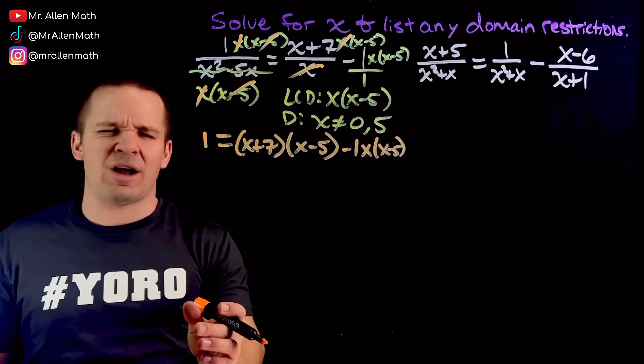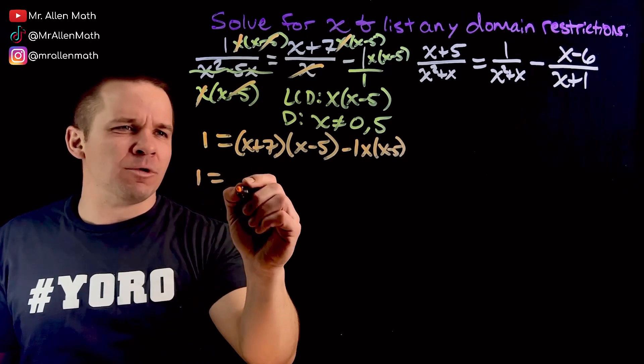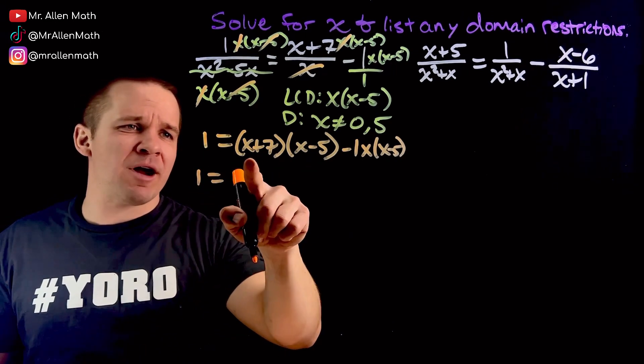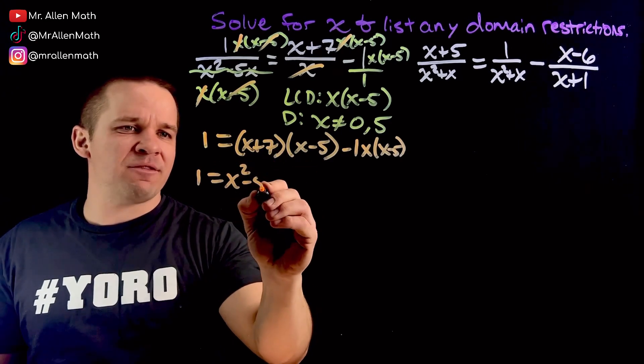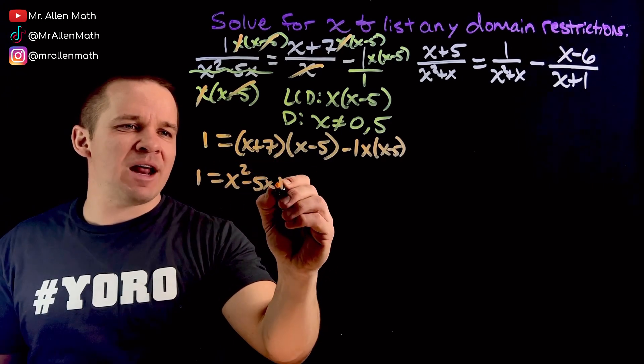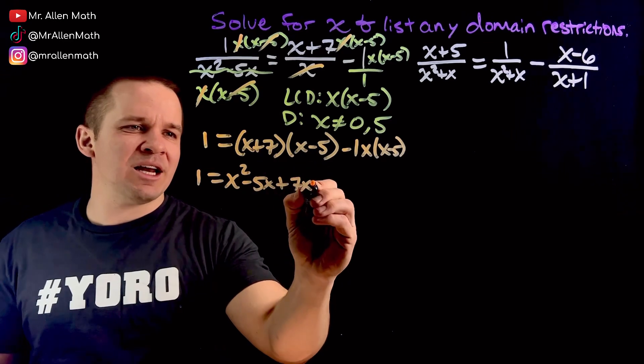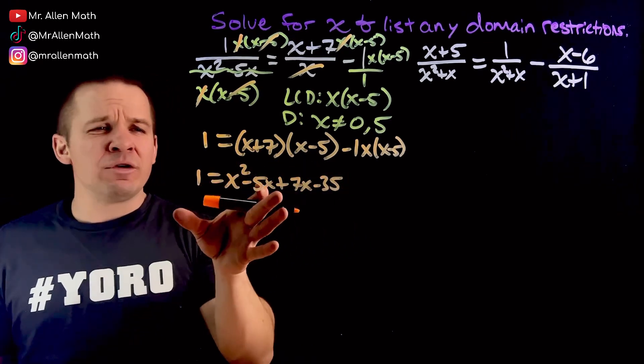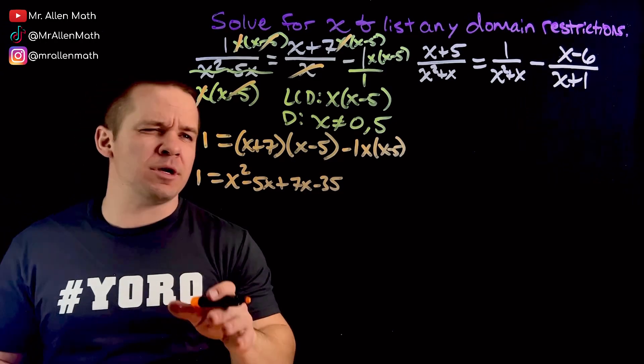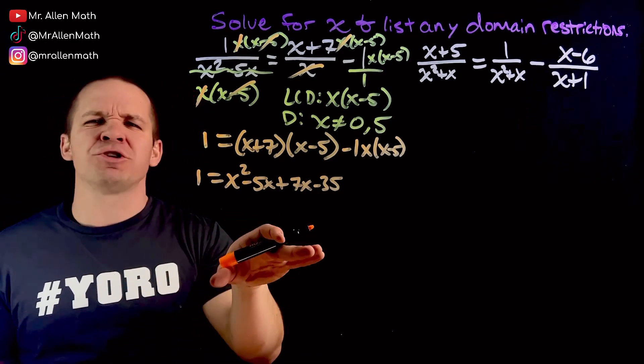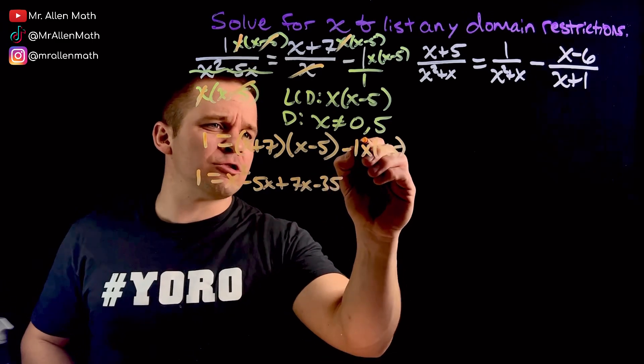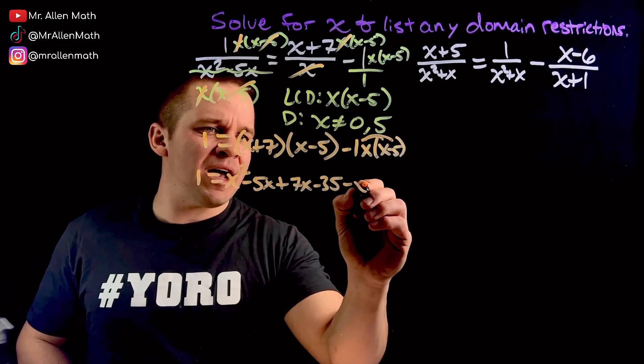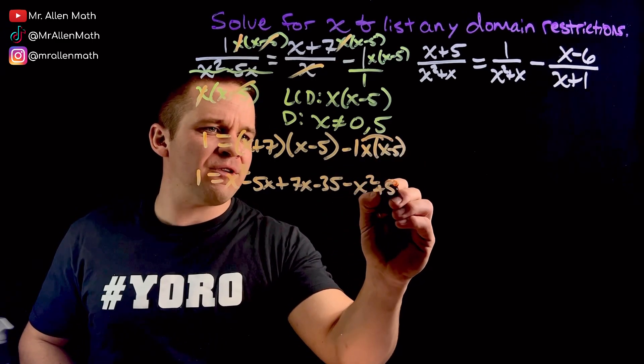1 equals, multiply these together. x times x, x squared. x times negative 5, negative 5x, 7x, and then I've got negative 35. If you can combine those two in your head on your own and get 2x, more power to you. Go for it. I usually like to do that, but I'll show it all here for this video. I'm just a nice guy like that. And over here, I'm going to distribute that in. I've got negative x squared plus 5x.